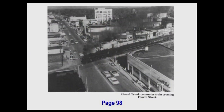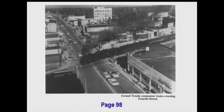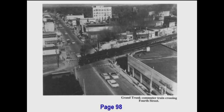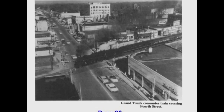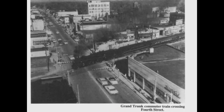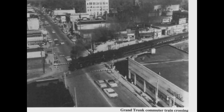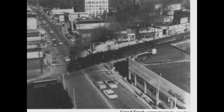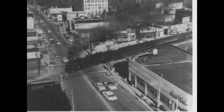Another photograph taken from the Washington Square building looking east on 4th Street shows a coal-burning steam locomotive going north on the Grand Trunk Western line. It was probably a Mikado-type locomotive, 2-6-2 configuration. Quite a marvelous picture.